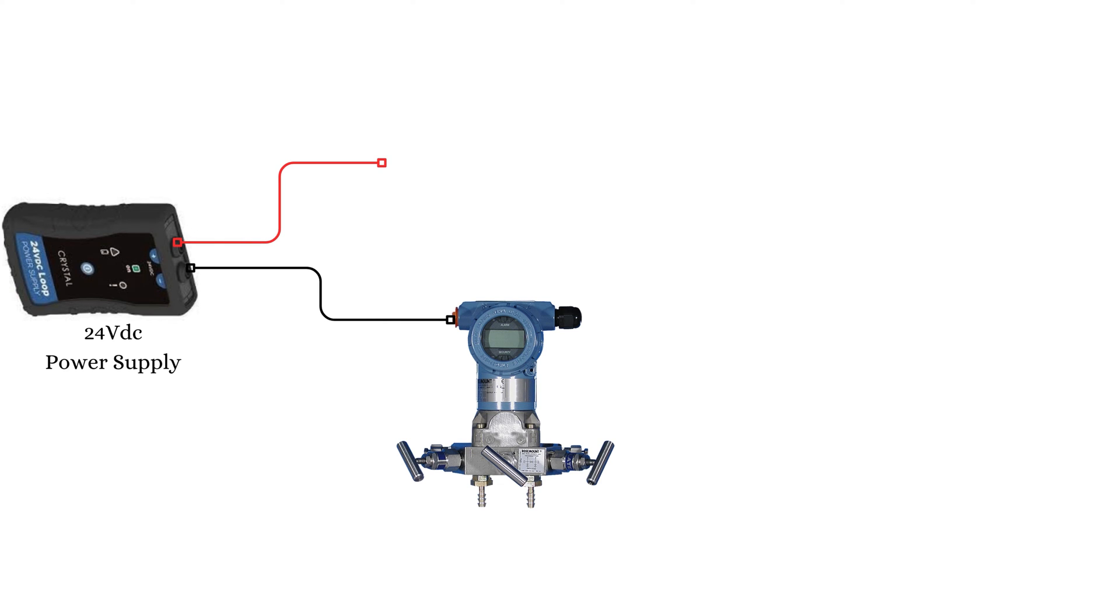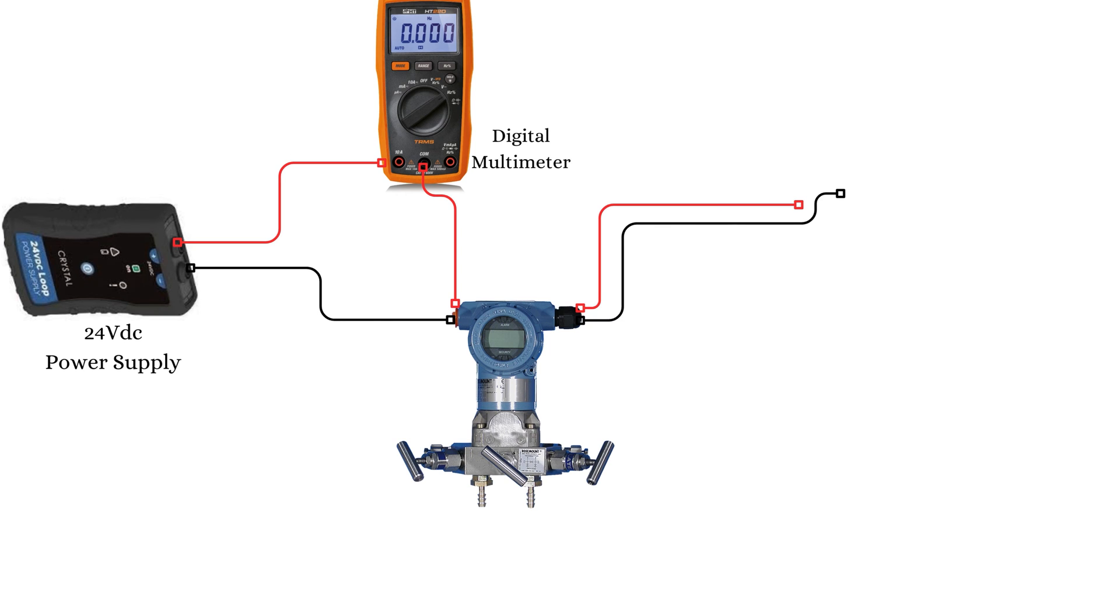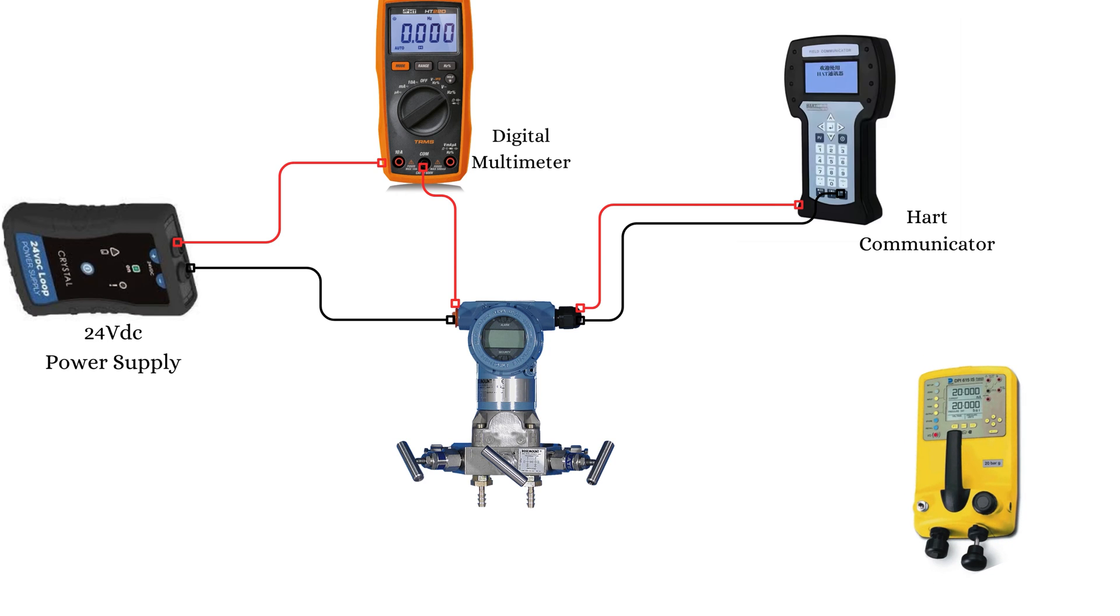Connect the power supply, the multimeter, and the DP flow transmitter in a series configuration. Make sure to connect the multimeter leads to the mA terminal and the common terminal. Now connect the DP transmitter to the pressure calibrator using the appropriate tubing.